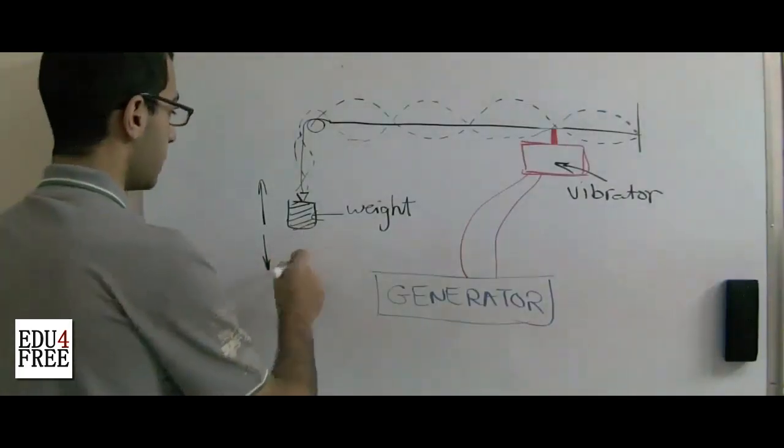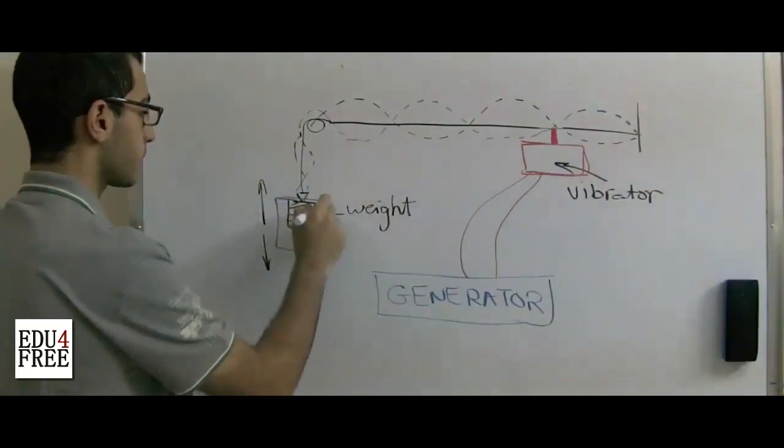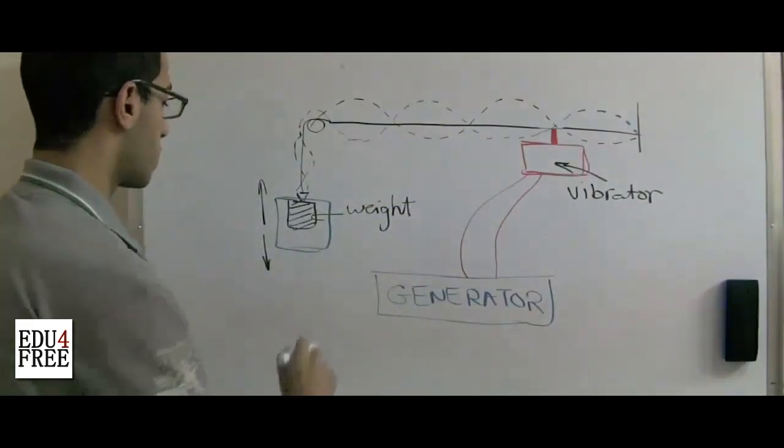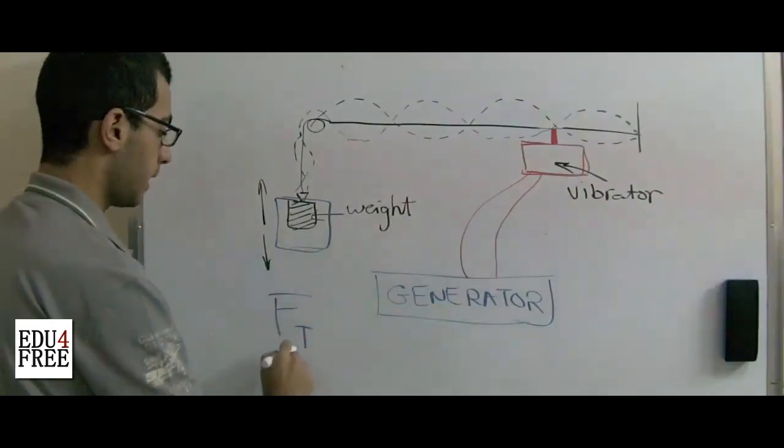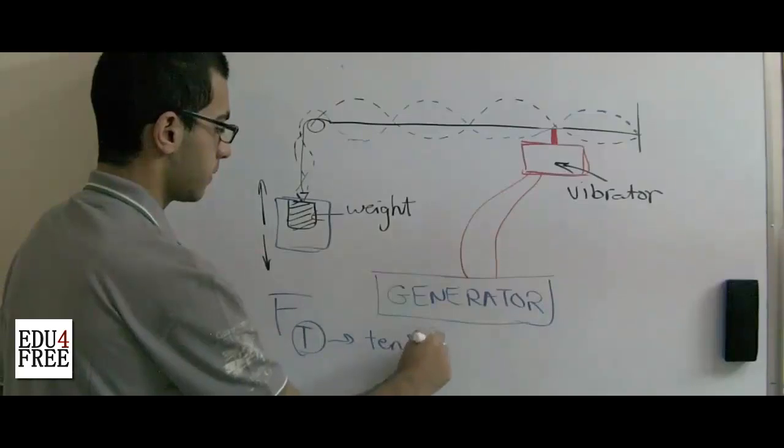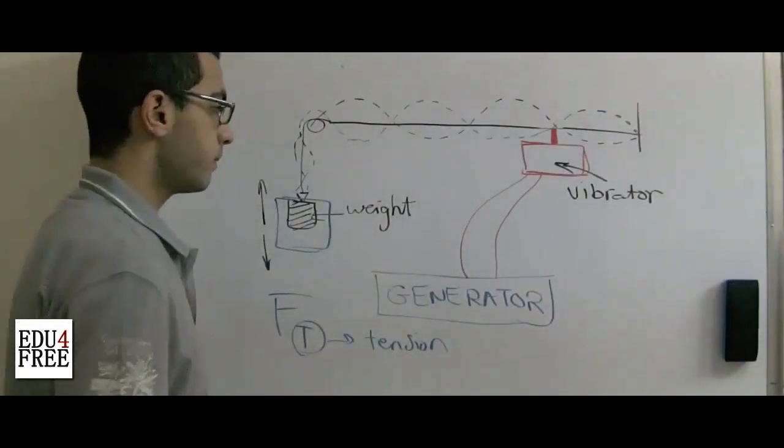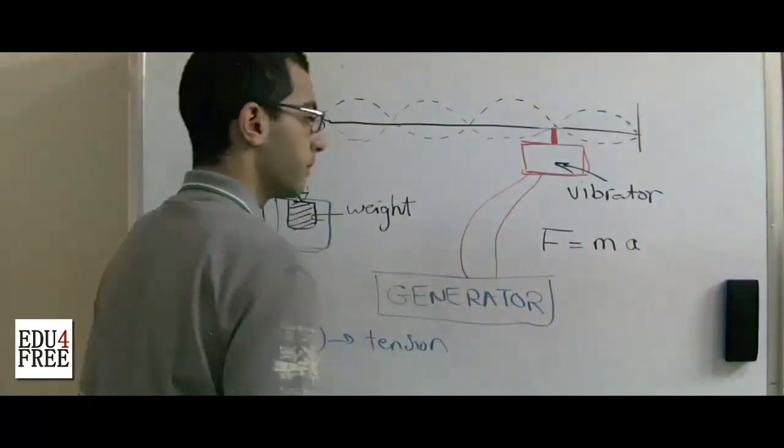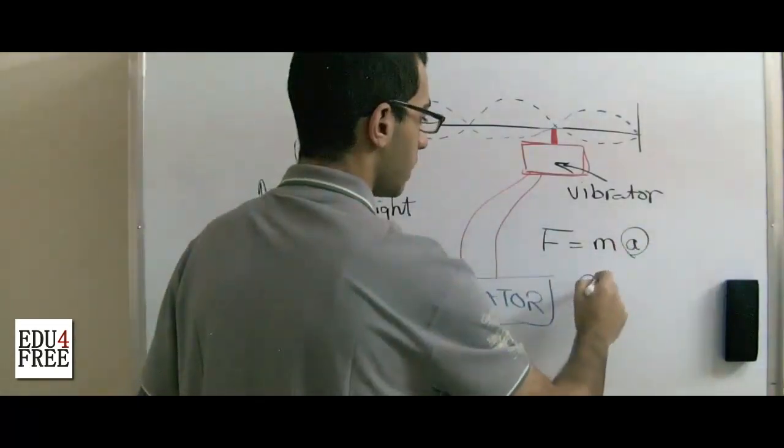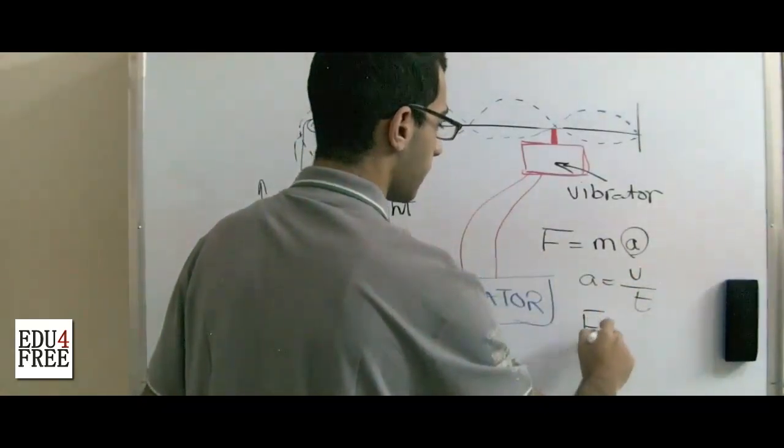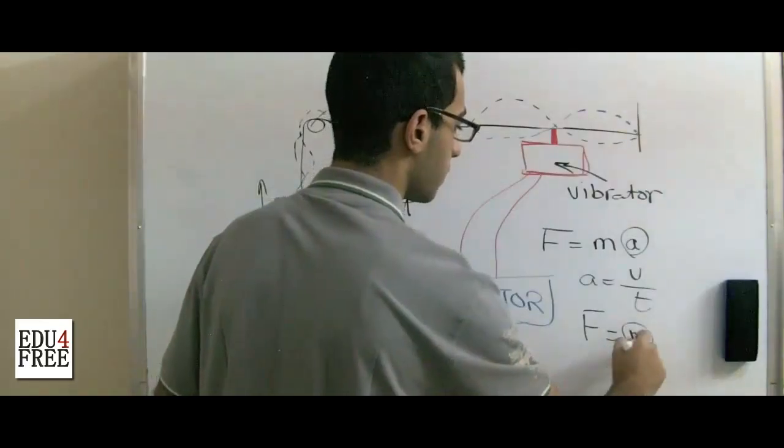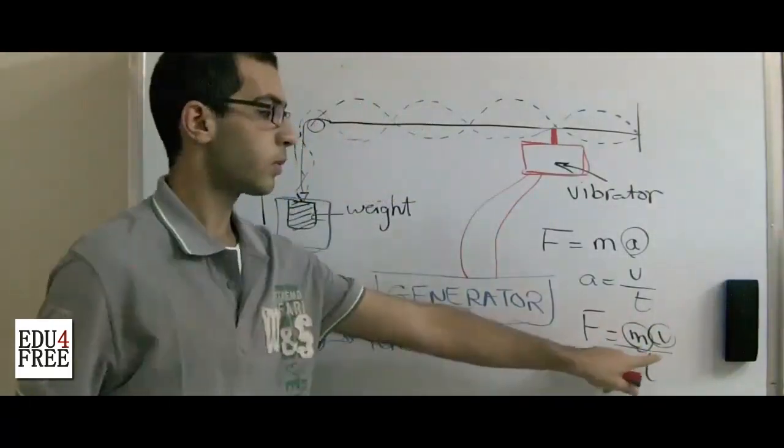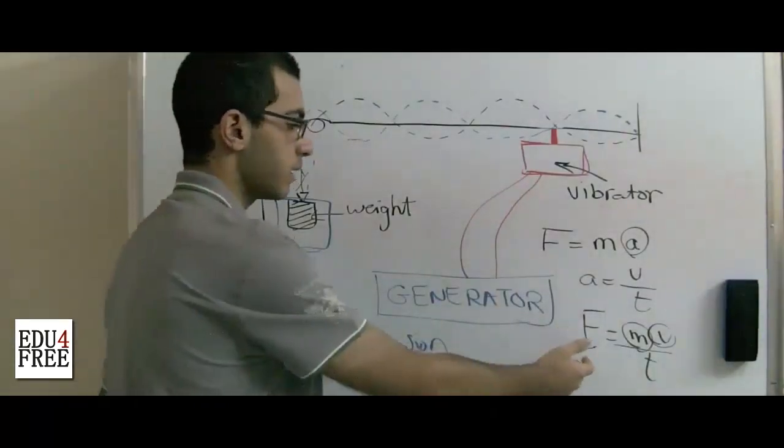So based on the weight, when the weight increases, of course the force to which the rope is exposed, which is called the FT (T stands for tension), increases. And as we know, the force equals the mass of the object multiplied by the acceleration. And as the acceleration equals the velocity over time, accordingly the force equals the mass multiplied by velocity over t. Since the force and the velocity are directly proportional, when the force increases, the velocity increases.